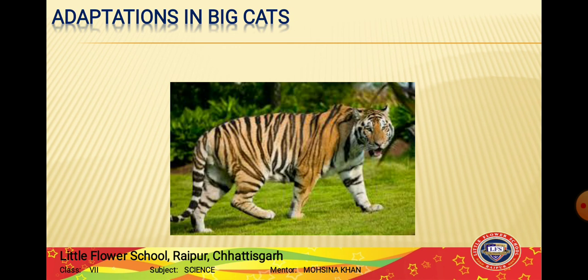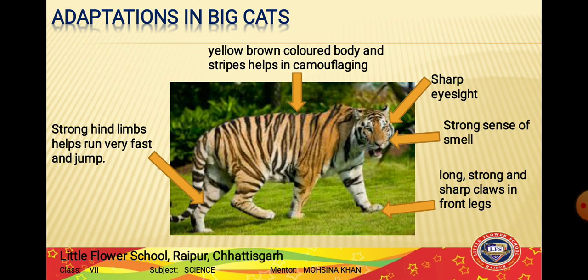Now let us see adaptations in big cats - lions, tigers, and leopards. These are called big cats because they belong to the cat family, just like domestic cats, but are much larger. Big cats eat the meat of other animals - they are carnivores. They have a highly developed sense of smell which helps them easily locate their prey.